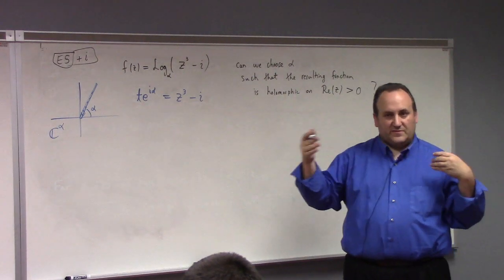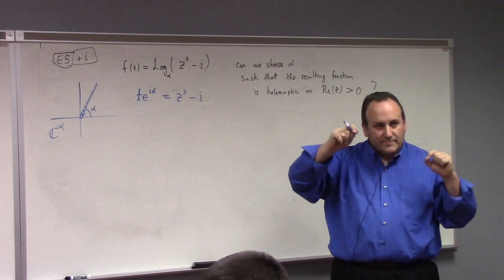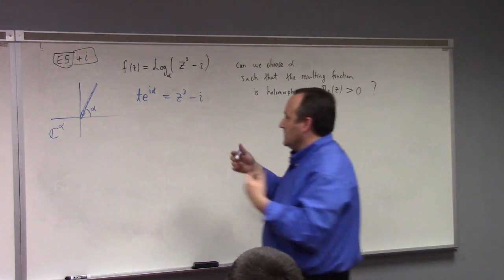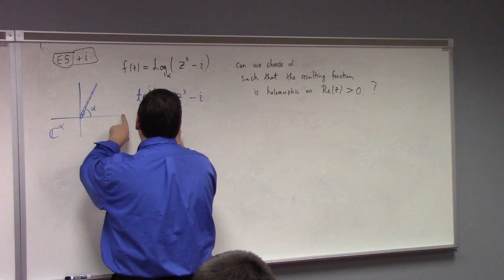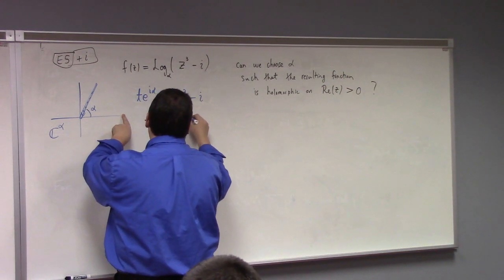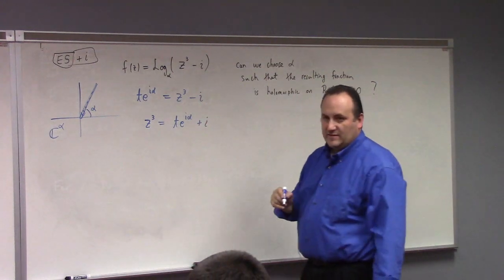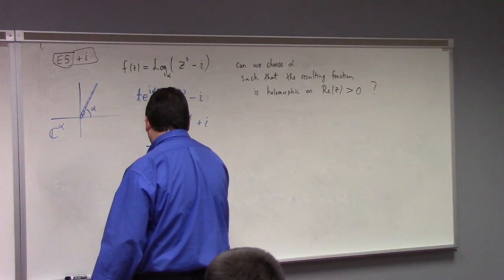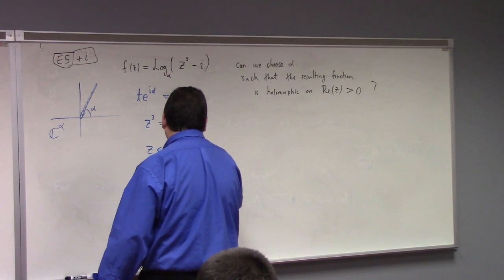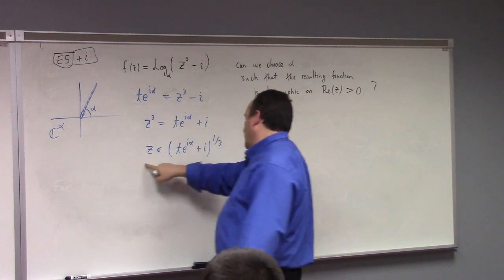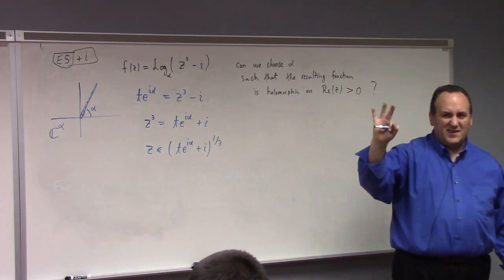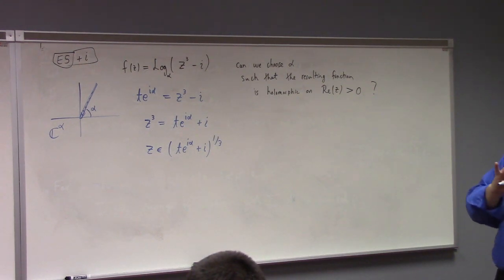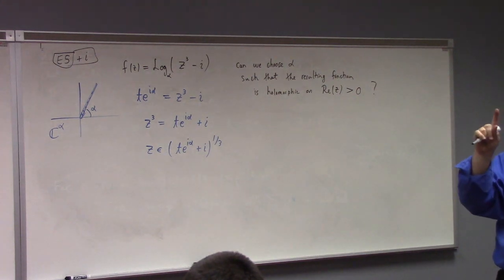Some of the problems are simple enough that it was just a shift, like 1 minus i or something — you can just kind of move the ray. But when it's a square or a cube or something more hideous, you have to analyze where the badness goes. To do that, I solve for z: z cubed equals T e to the i alpha plus i. This means z is an element of the third roots of T e to the i alpha plus i. We know that there are in fact three places of badness when we have a cube in there.